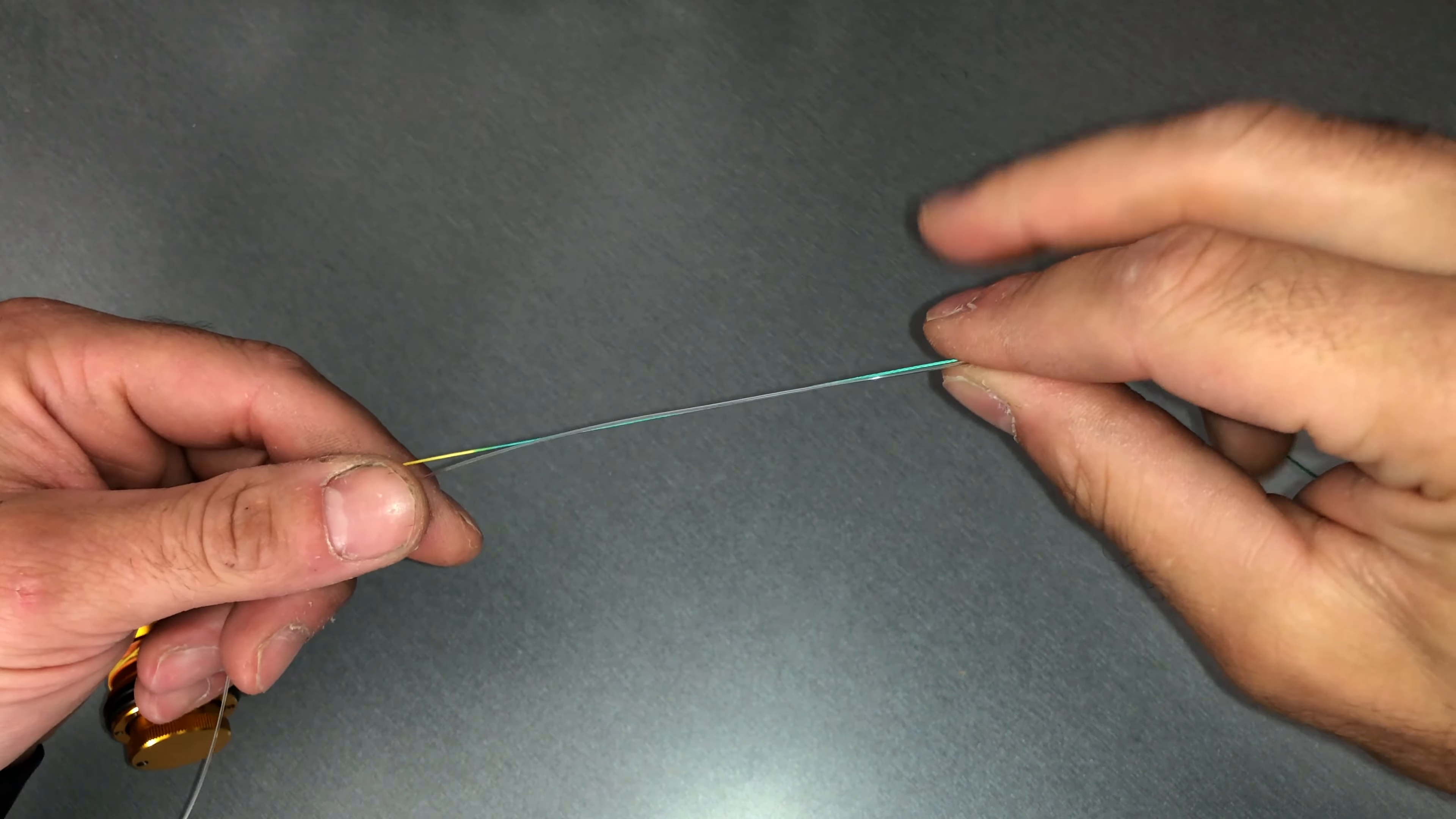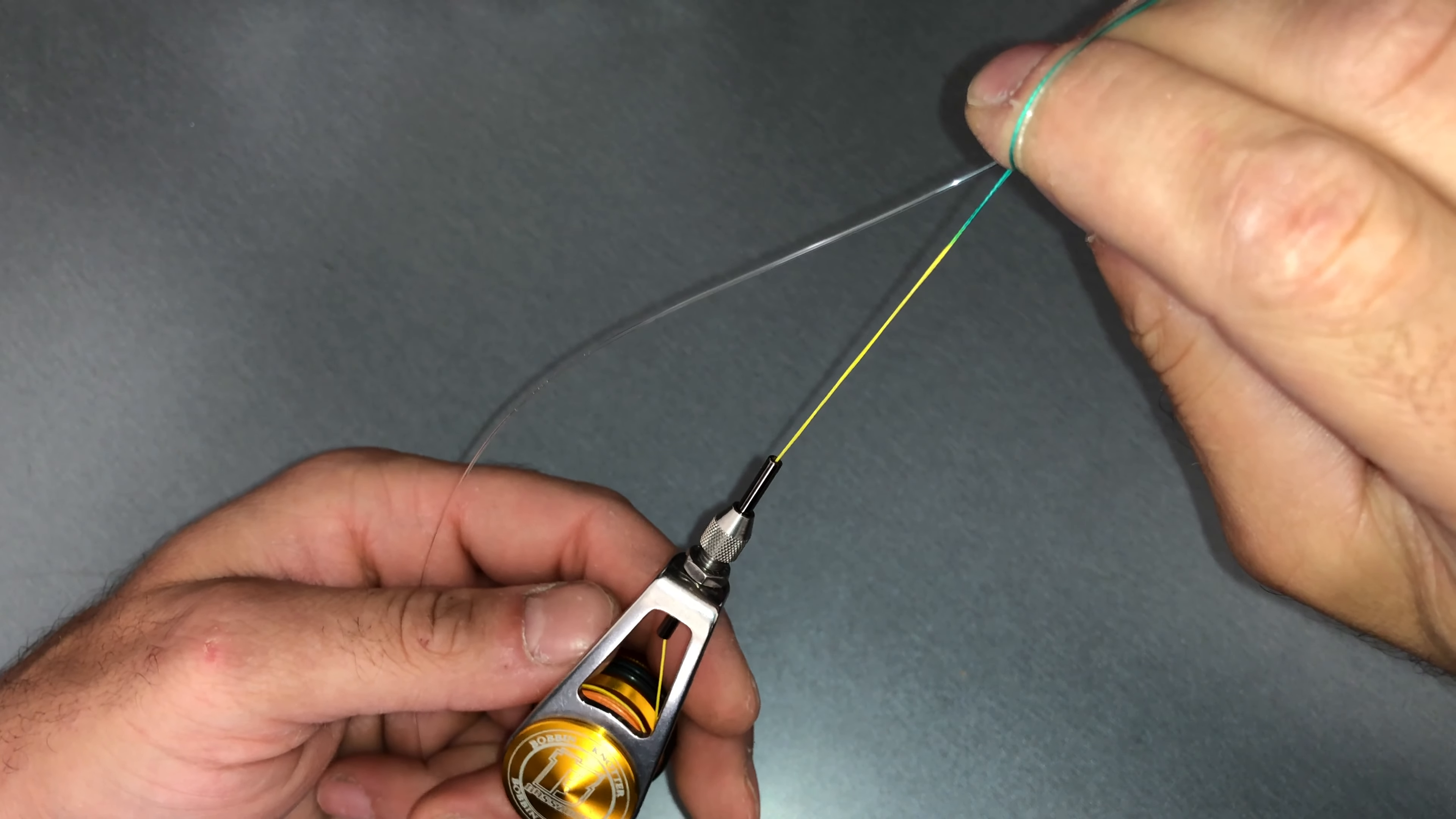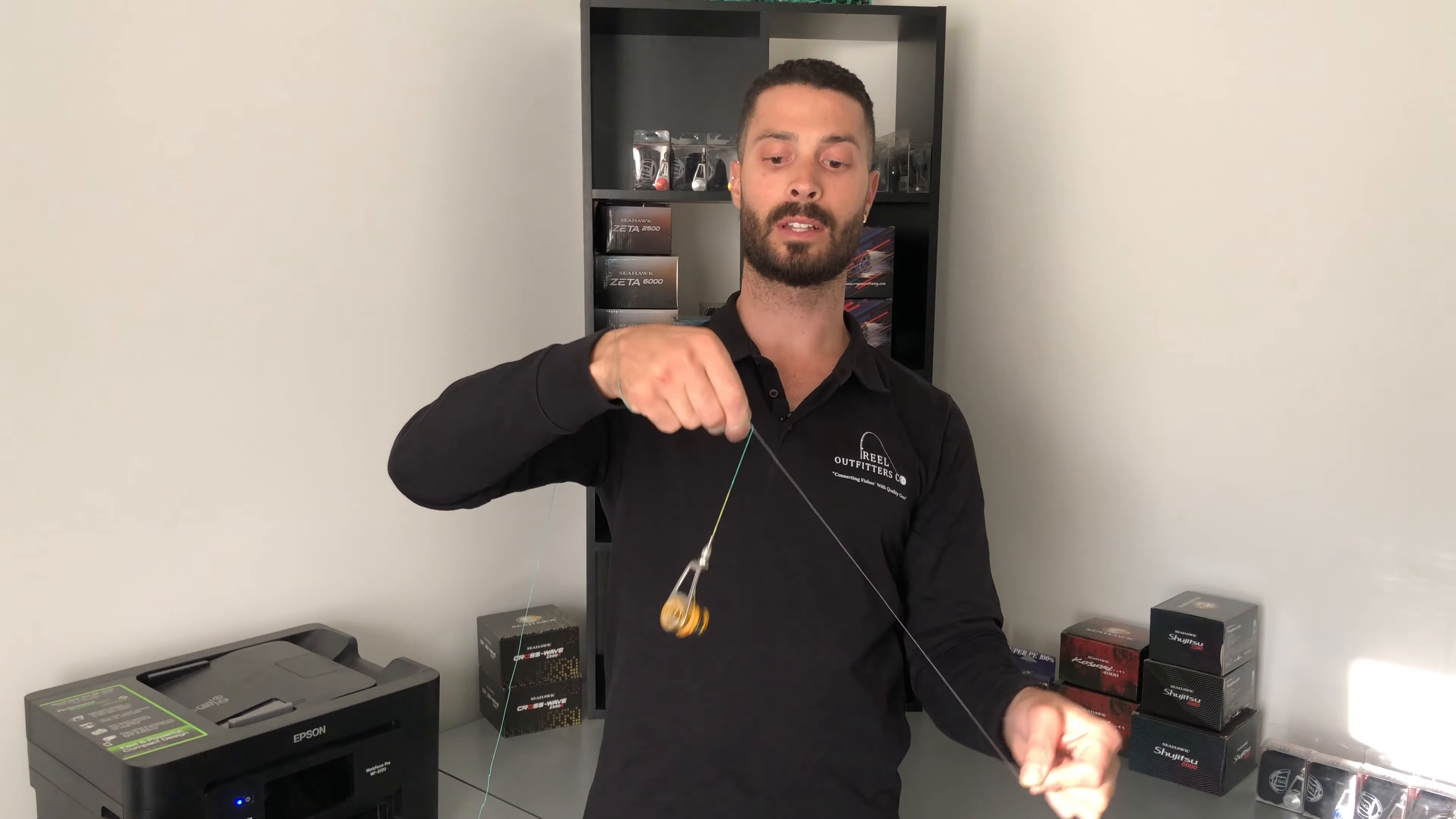Pinching there with my right hand, and then we want to wrap that around those two fingers, and that's going to be the position that we do our wraps in. Okay guys, so now we've got our two lines wrapped around our two fingers here, and I just get that braided main line up over my arm so that it doesn't get tangled when we start the wraps.